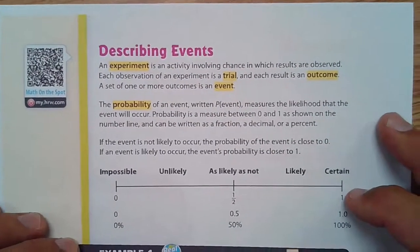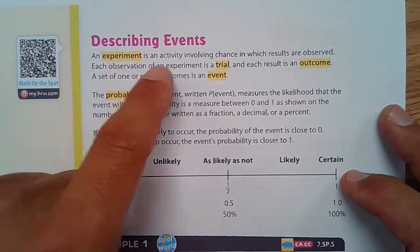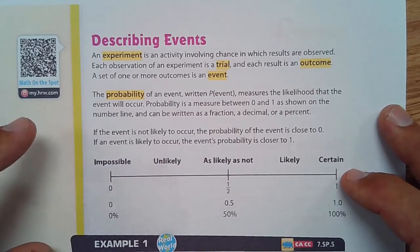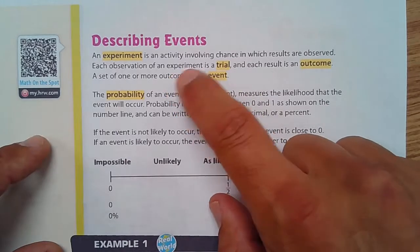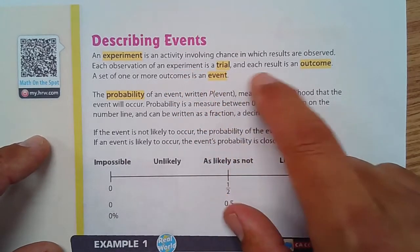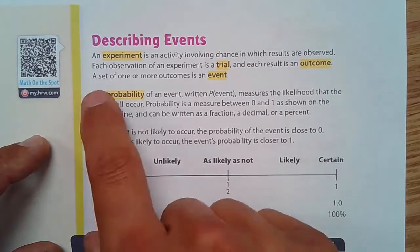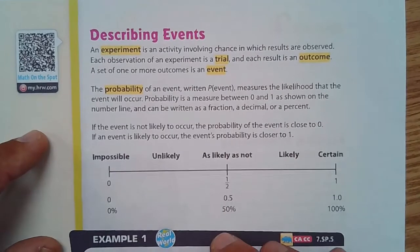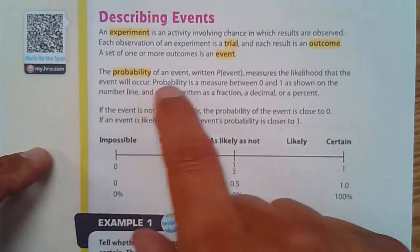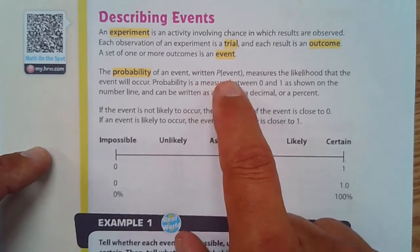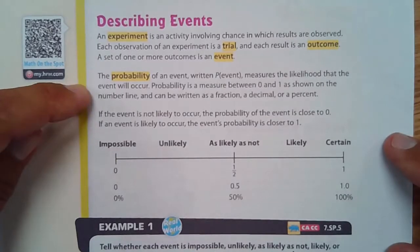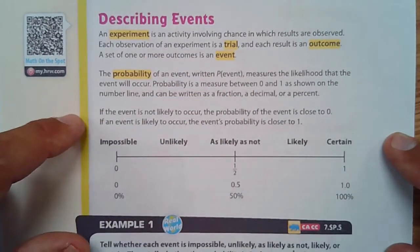Moving on to describing events. An event is an activity involving chance in which results are observed. Each observation of an experiment is called a trial, and each result is an outcome. A set of one or more outcomes is an event. The probability of an event, written P of the event, measures the likelihood that an event will occur.